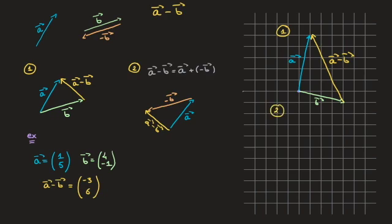Now let's look at method two. In this method, instead of subtracting B, we think of it as adding negative B. Starting from vector B, to define negative B we take the opposites of B's components, giving negative B components of (-4, 1).